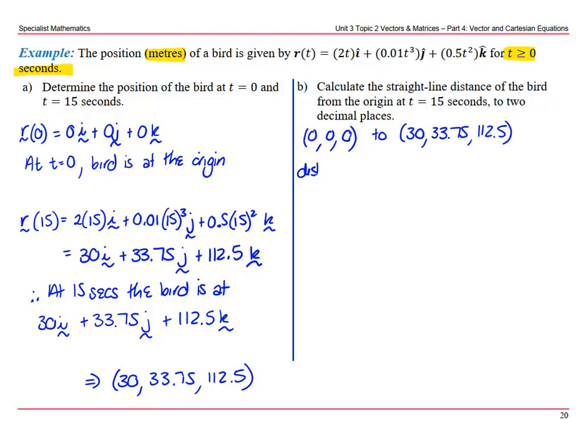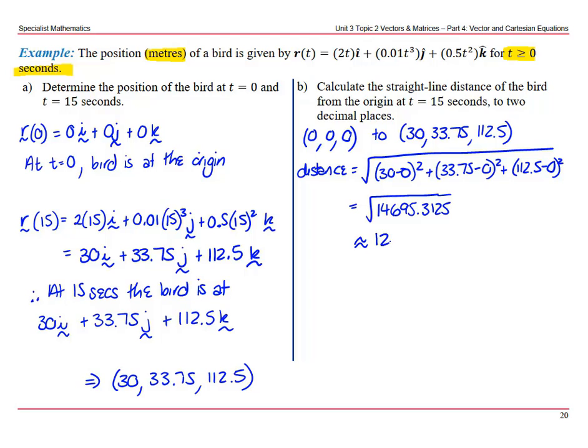So the distance is going to be the square root of (30 minus 0) squared plus (33.75 minus 0) squared plus (112.5 minus 0) squared. Go to your calculator: 14,695.3125, which is approximately 121.22 meters. Therefore, at 15 seconds, the bird is approximately 121.22 meters from the origin.